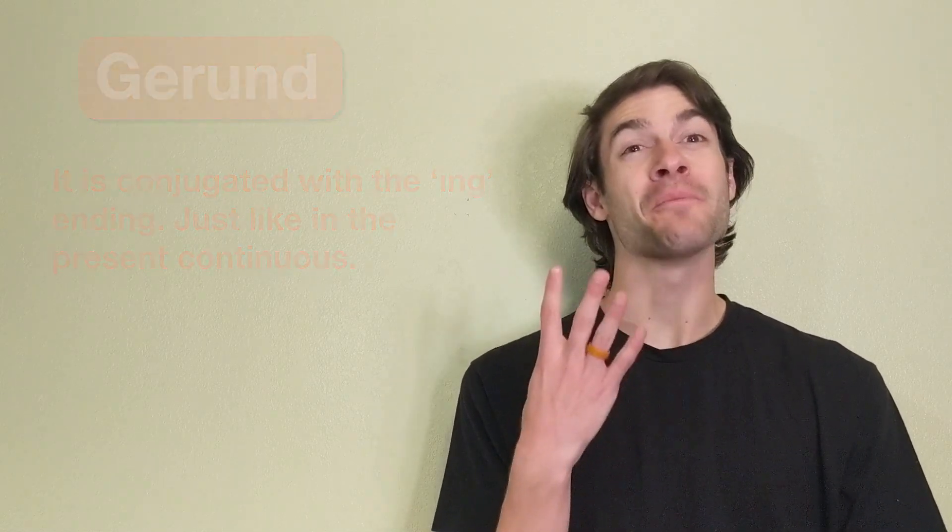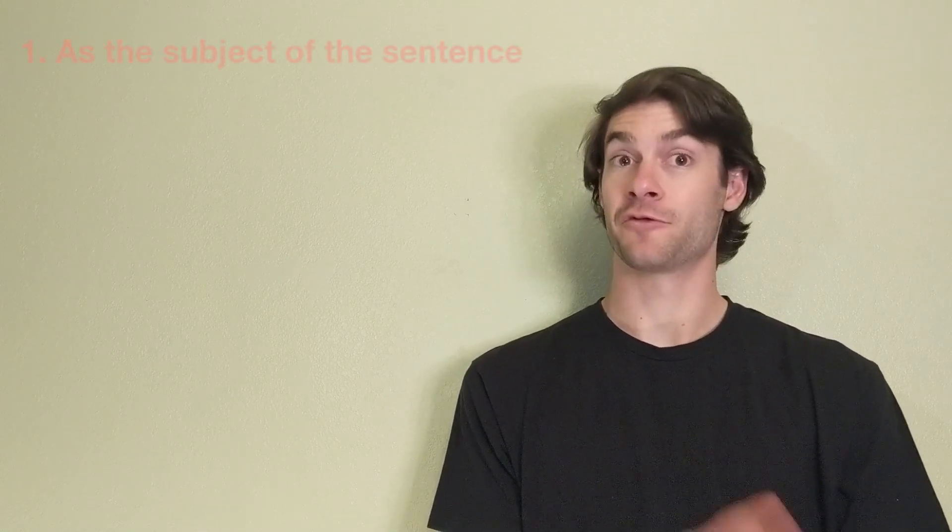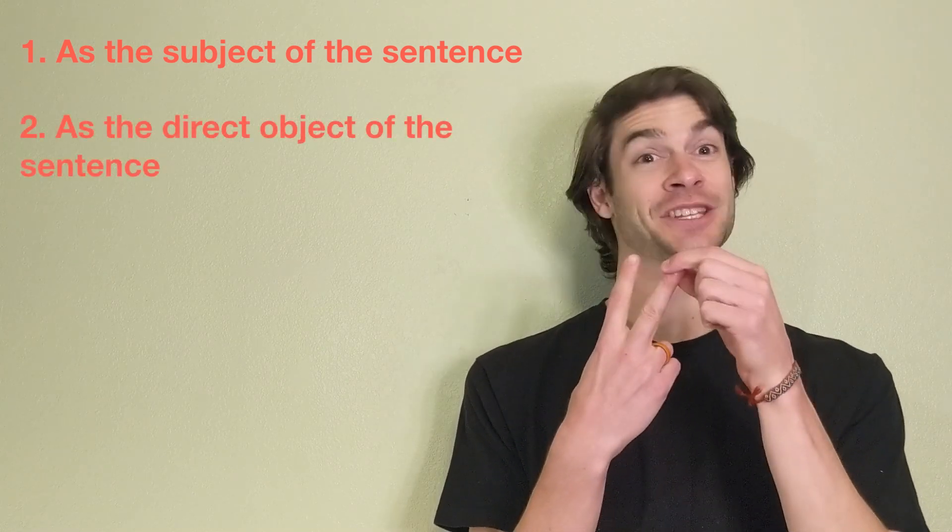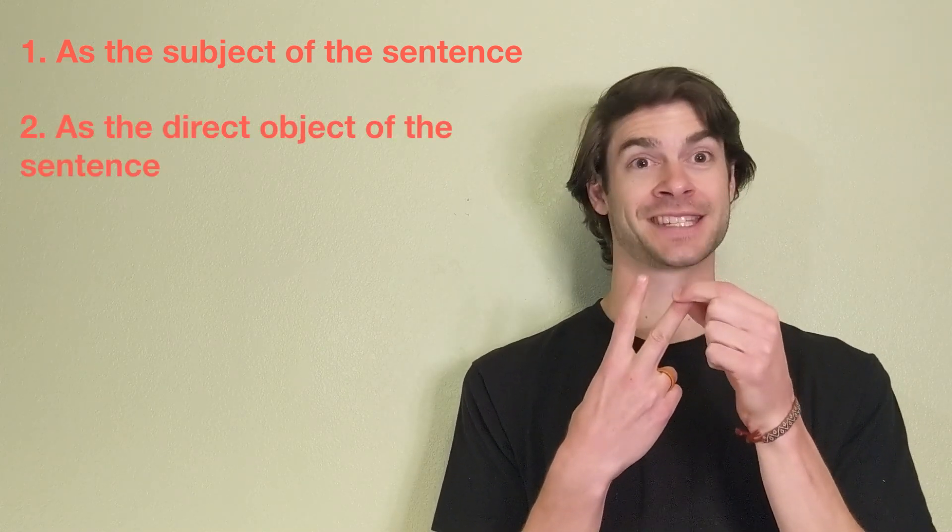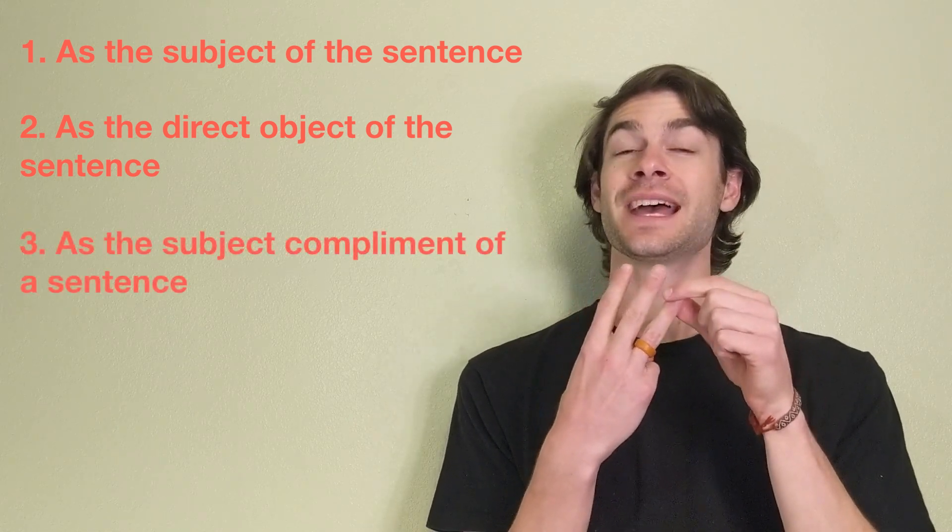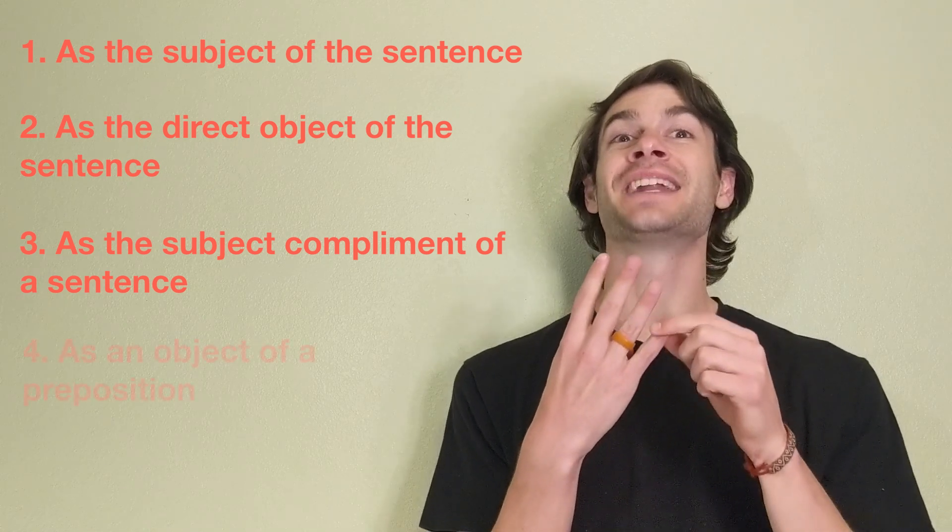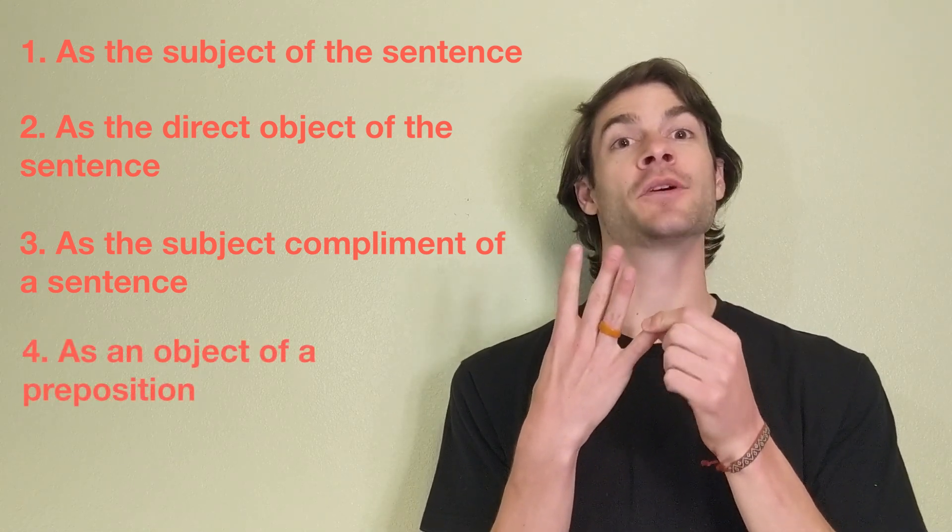There are four main ways in which we use a gerund. First, as the subject of the sentence. Second, as the direct object of the sentence. Third, as the subject complement of a sentence. And finally, as an object of a preposition.